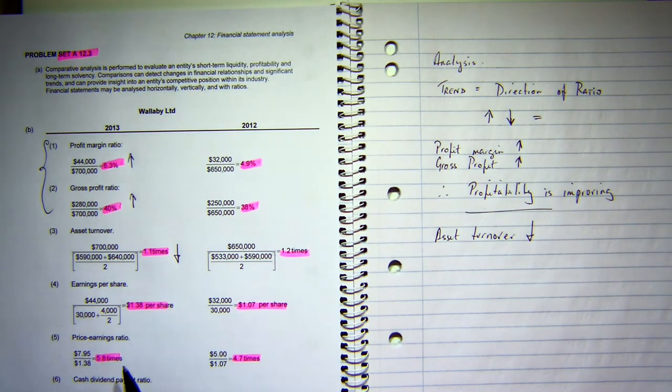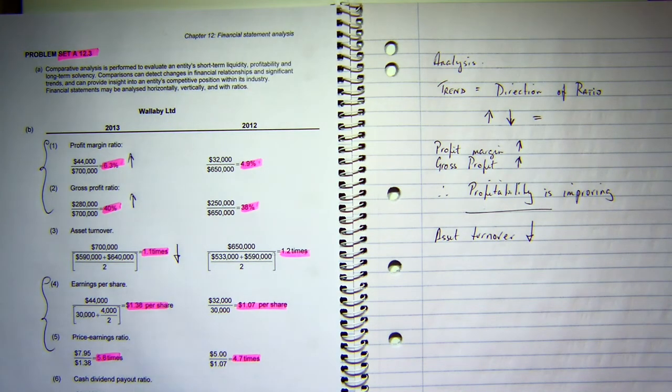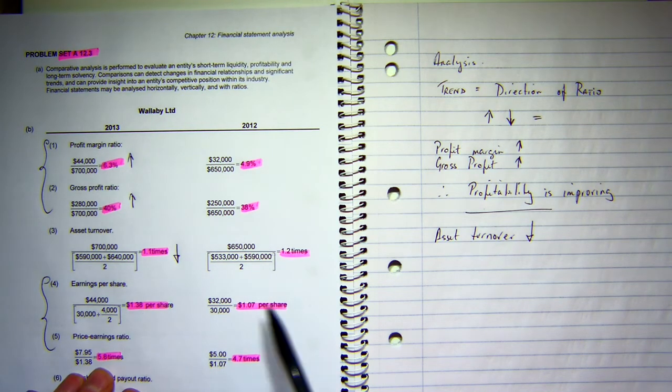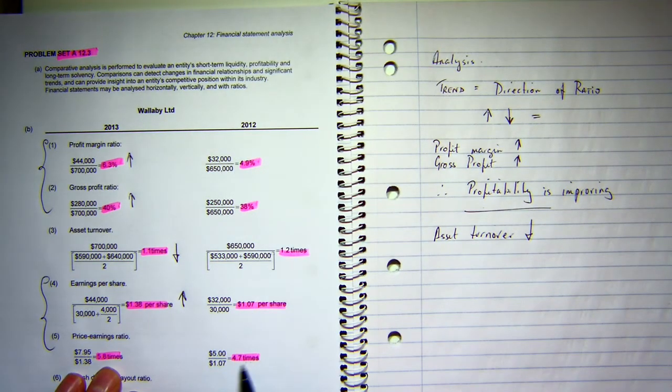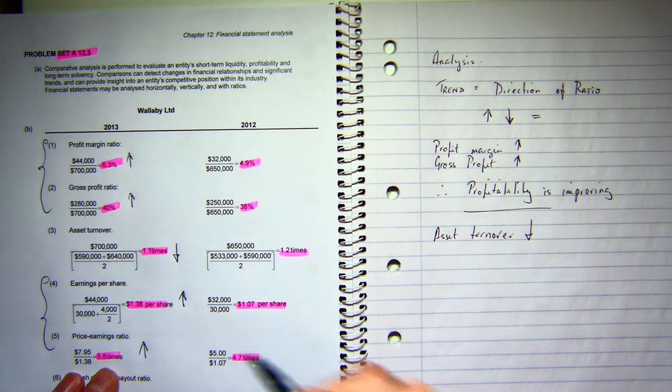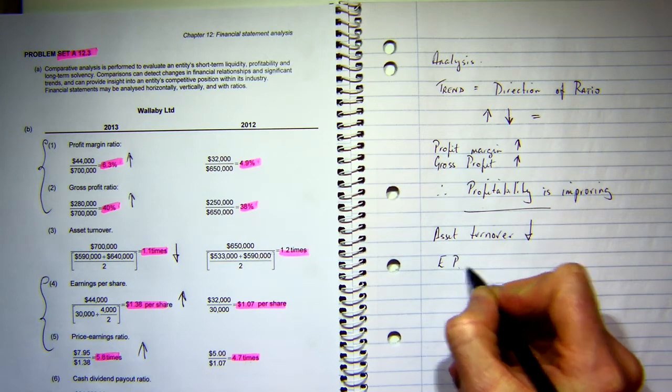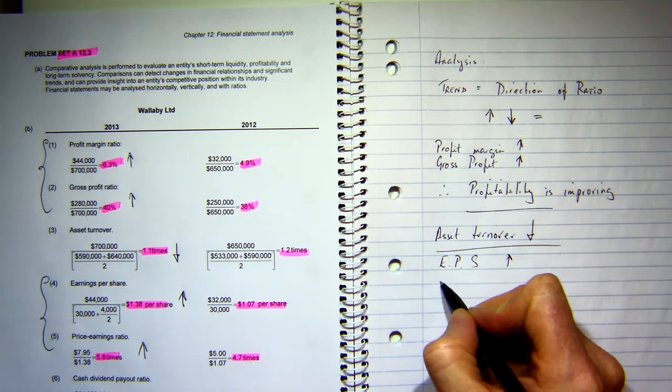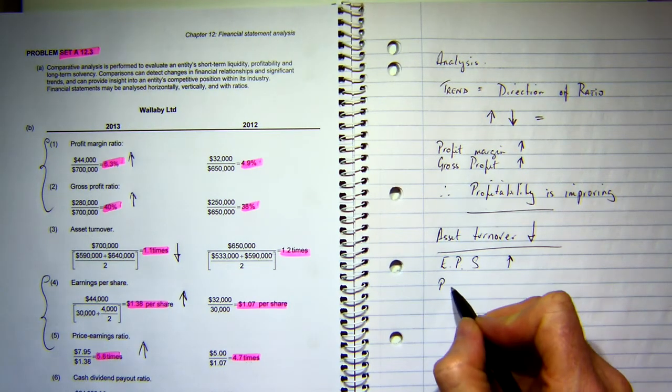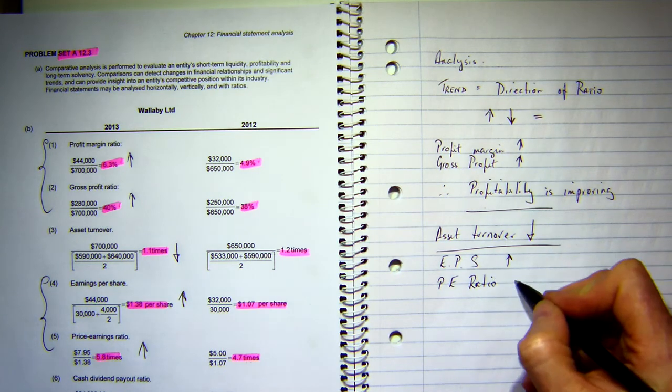My earnings per share and my price earnings ratio, these are grouped together as well. My earnings per share has increased, and price earnings ratio has gone from 4.7 to 5.8. So EPS or earnings per share increased, and price earnings ratio has also increased.